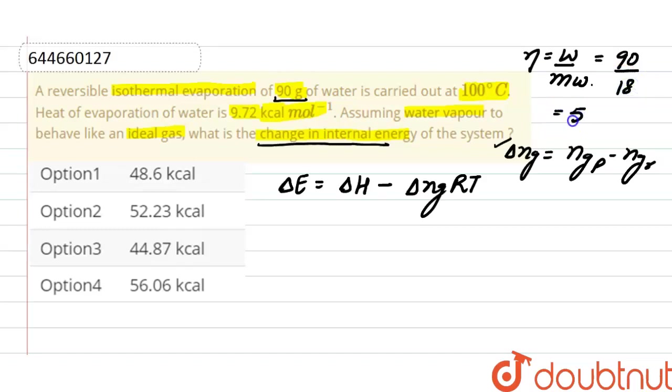So the number of moles of water here are 5. The value of gas constant is equal to 2 calories per Kelvin per mole. Temperature here is given in degrees Celsius, so we will convert it into Kelvin by adding 273.